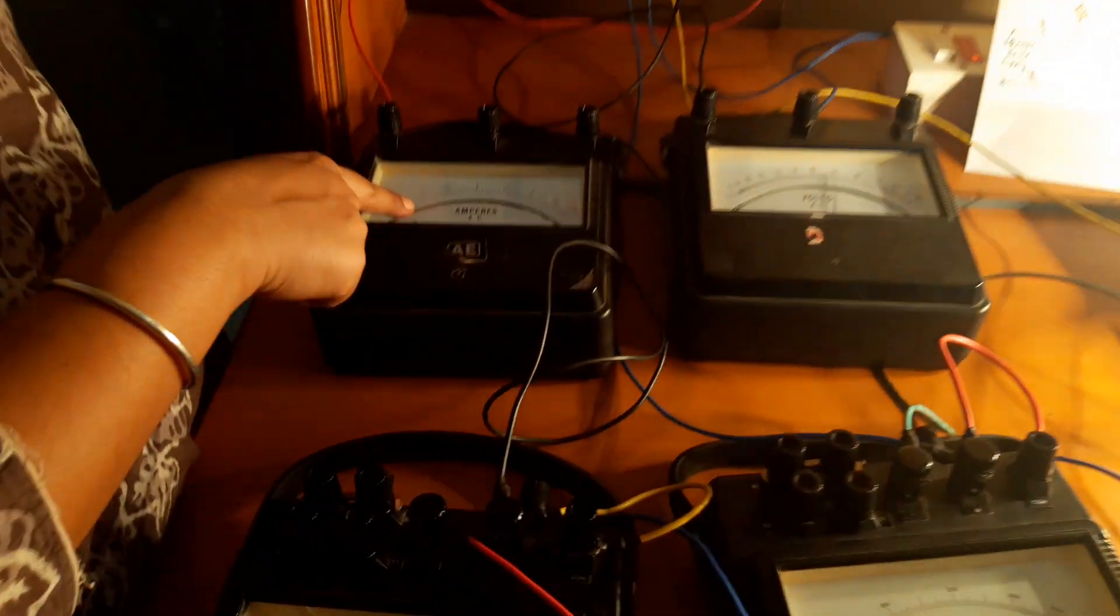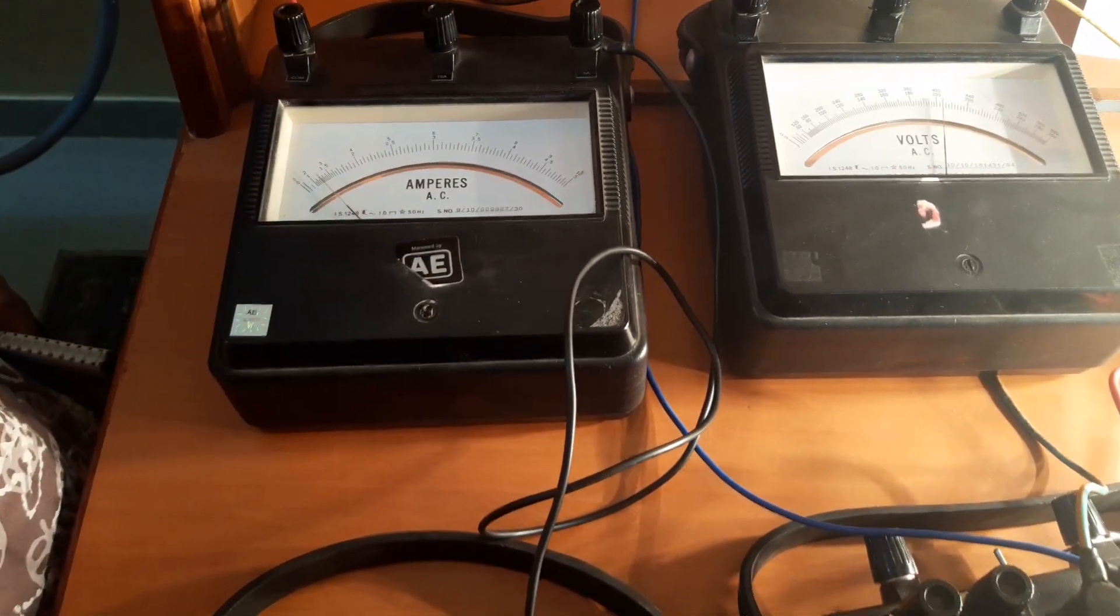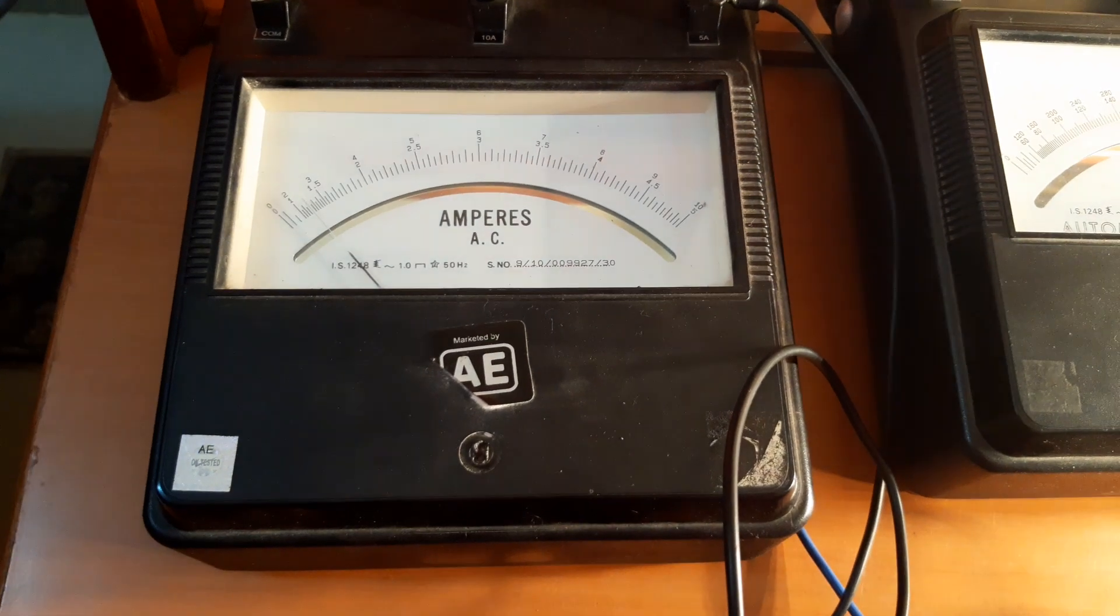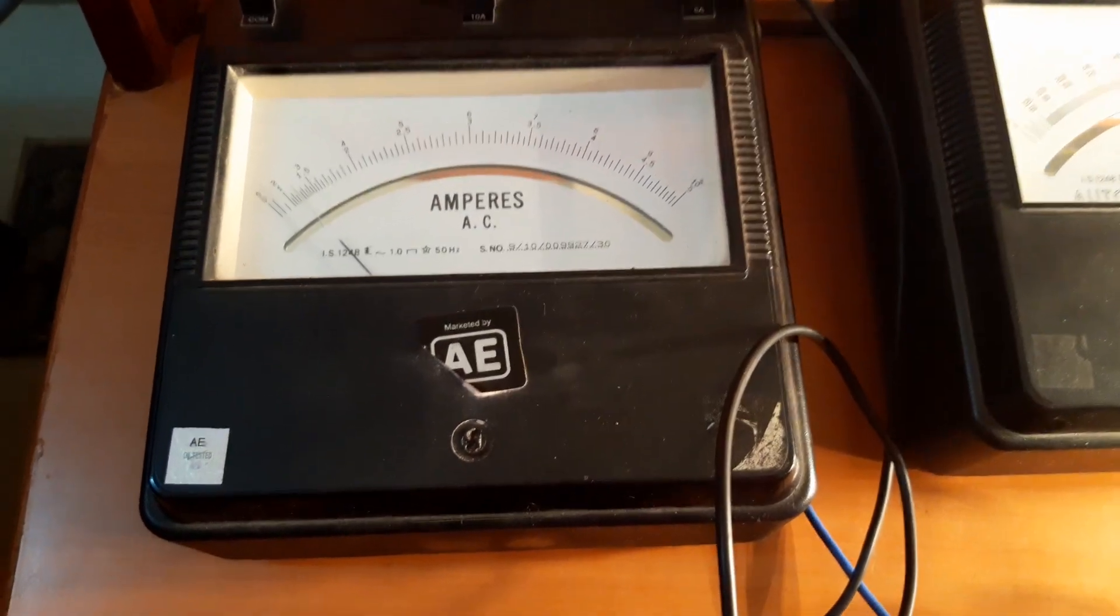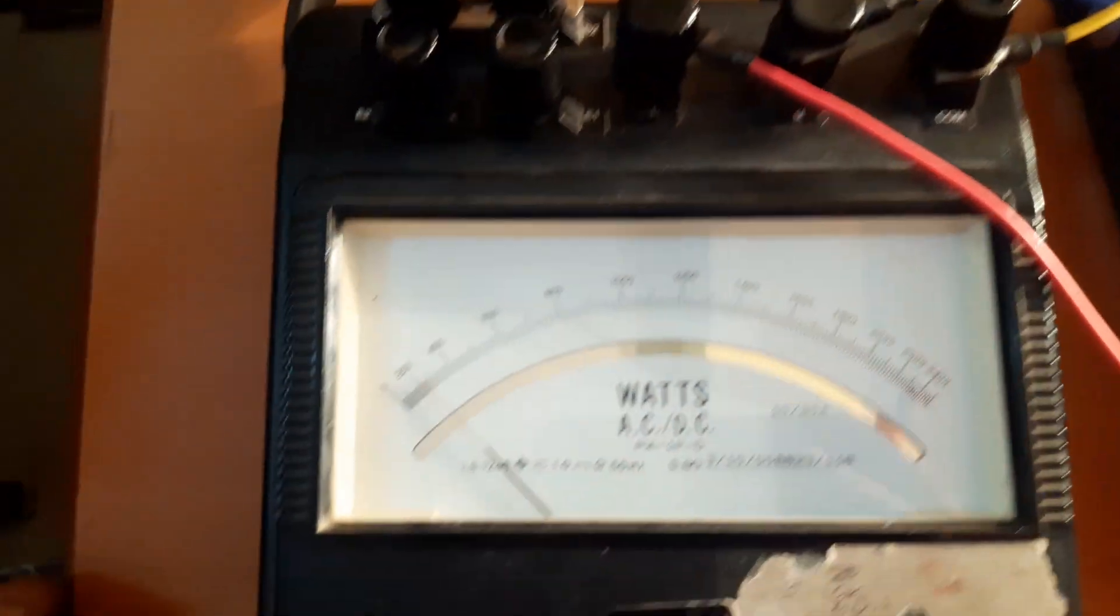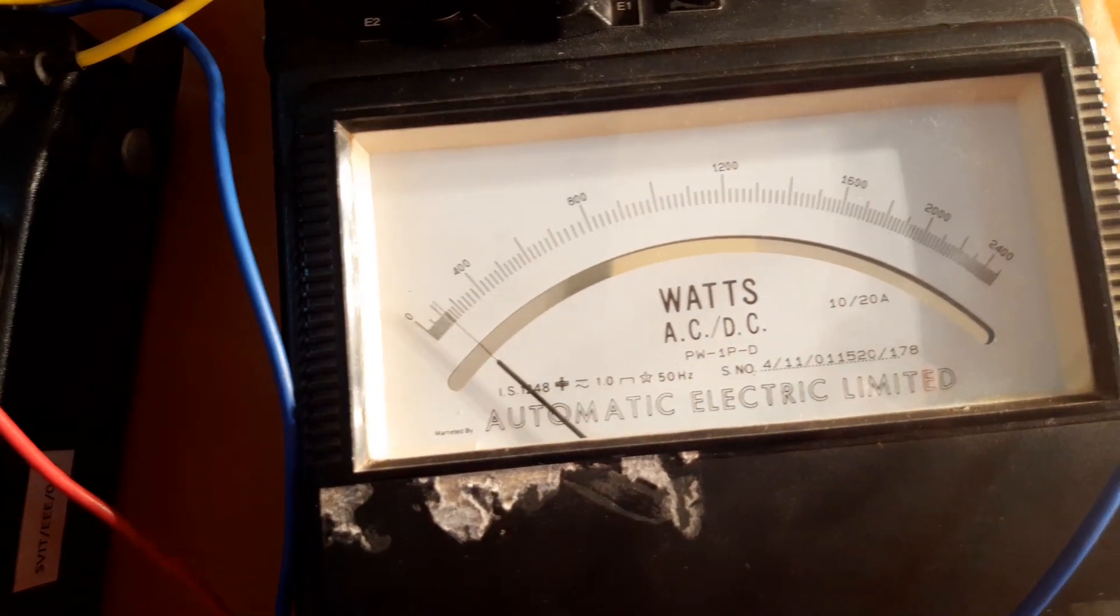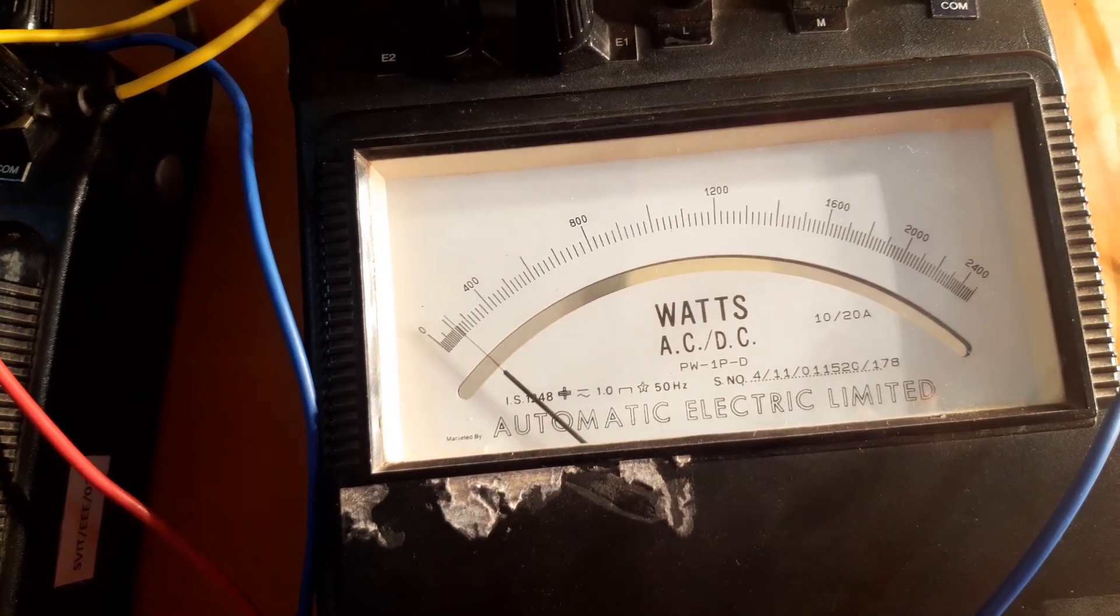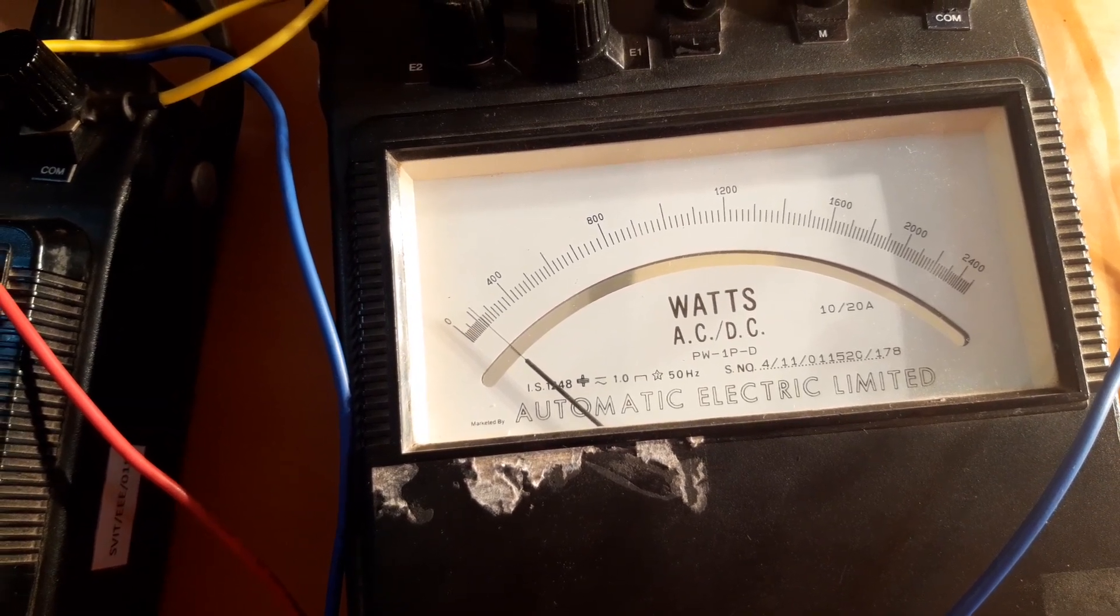The readings of voltage, current, and power consumed are being recorded in the meters. The ammeter is recording 1.2 amperes, the voltmeter is recording 408 volts. Wattmeter 1 is displaying 260, multiply it with the wattmeter constant 2. Wattmeter 2 is displaying 160. Again, multiply it with the wattmeter constant 2 before you tabulate in your tabulation column.